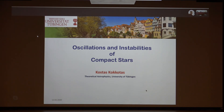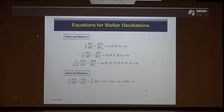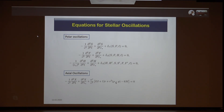Yesterday we were discussing the axial and polar perturbations for black holes — the same is true also for neutron stars. For non-rotating or relativistic stars in general the equations become a little more involved. For axial perturbations the equation is similar to the black hole case, but there is a new term related to density and pressure. The axial perturbations for non-rotating stars do not induce density or pressure variations; they only excite spacetime perturbations called w-modes, analogous to the quasi-normal modes of black holes.